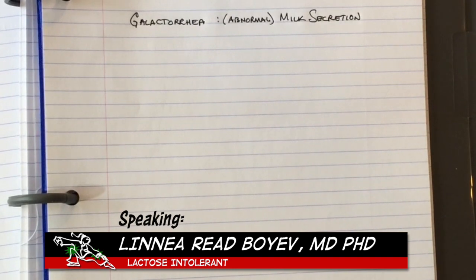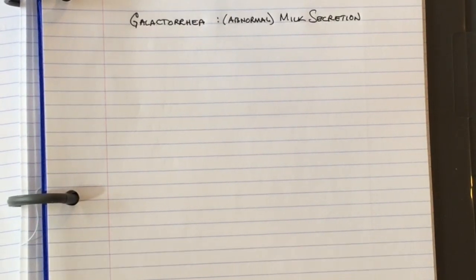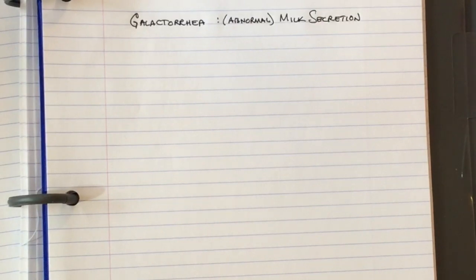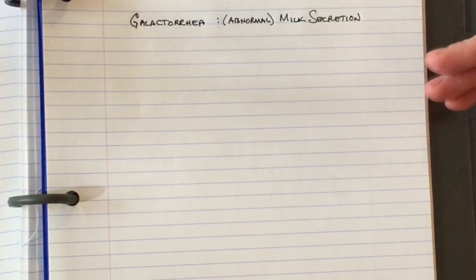I want to spend a few minutes talking about galactorrhea. There was confusion about this in class. Galactorrhea is milk secretion. Galacto refers to galactose, the sugar in milk, and rhea means runny, so runny milk secretion, usually abnormal milk secretion.